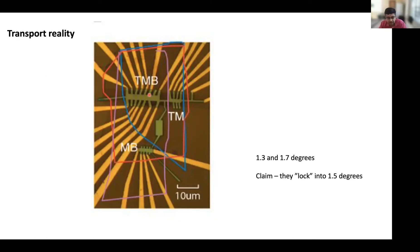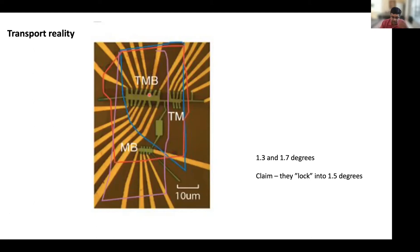Our question when we started doing STM on this was: how much is a real sample actually like the theorist's conception? And if it's not, does this affect the electronic structure? In twisted bilayer graphene, the differences are not super important to the physics — there can be some strain and heterogeneity, but the continuum model is still a very good way of thinking about the system. The question is whether that's also the case in twisted trilayer graphene.